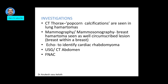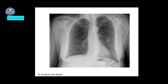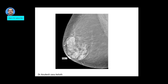For liver hemangiomas, renal hemangiomas, or splenic hamartomas, an ultrasound and further a CT of the abdomen can be done. If the lesion is external, an FNAC can be attempted. This is a chest X-ray showing a pulmonary hamartoma — you can see the lesion here. This is a mammogram which shows the breast hamartoma.